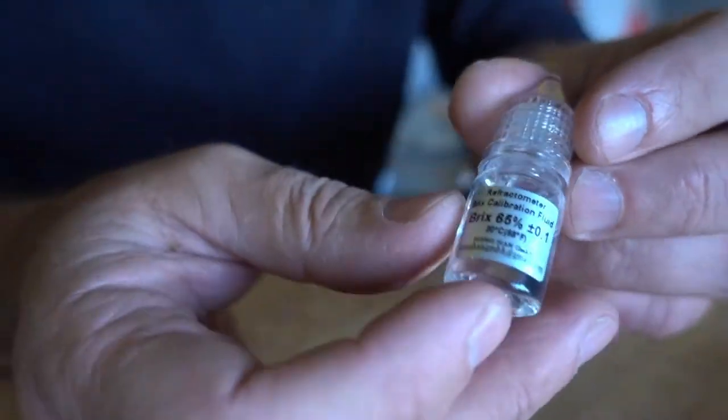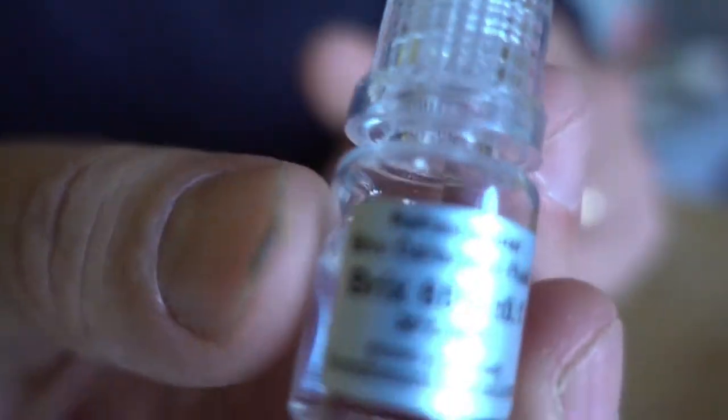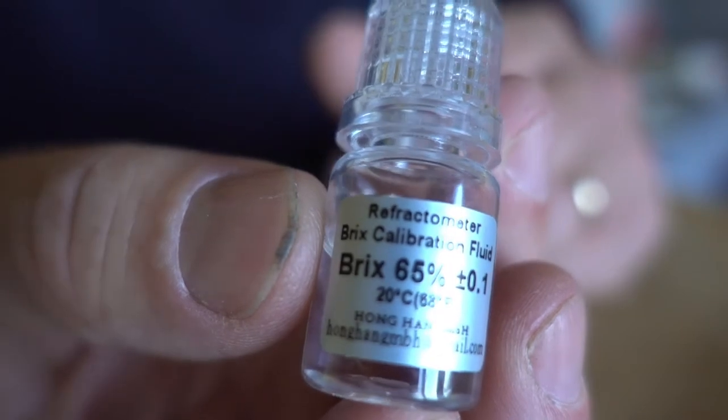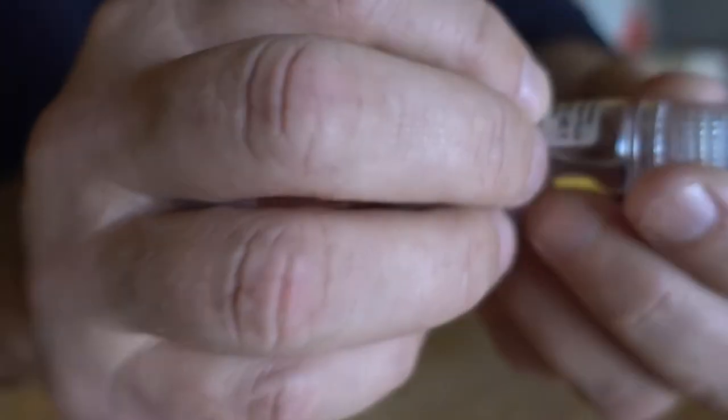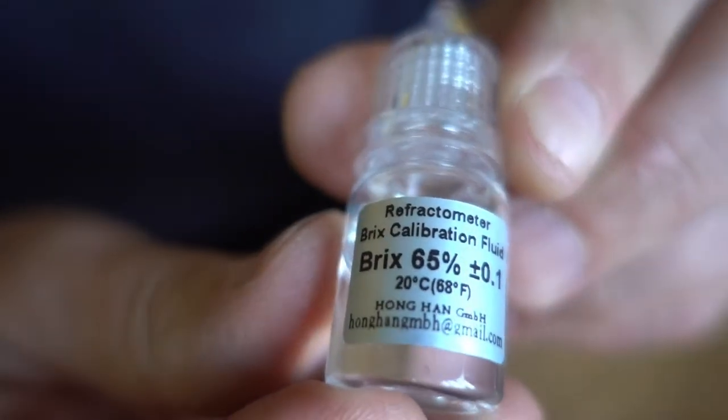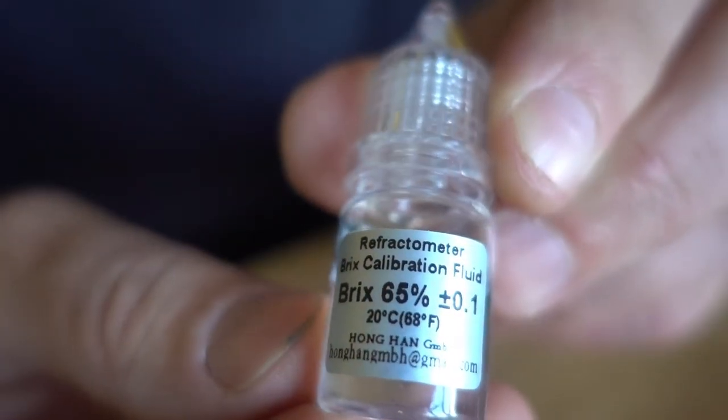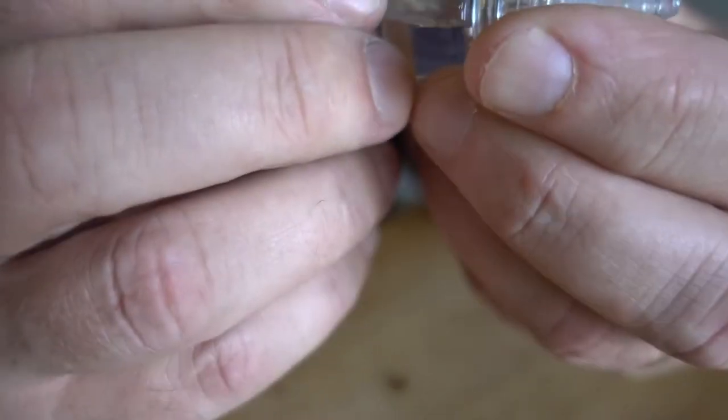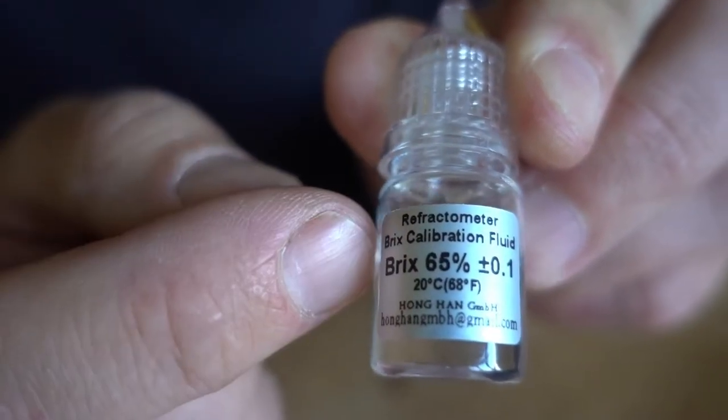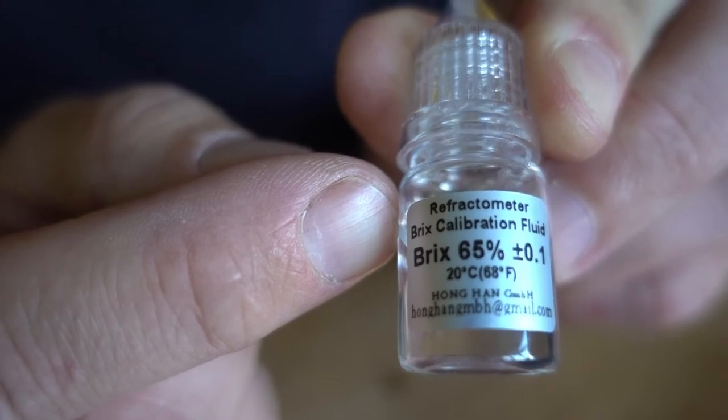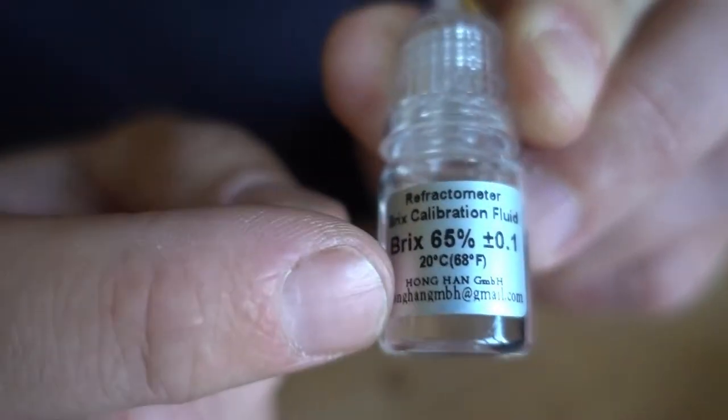Some refractometers come with a little bottle of fluid called calibration fluid and this one says bricks 65 percent plus or minus 0.1. So if you get a 65 percent bricks reading, I still don't know what bricks means, then you've got an accurate reading.